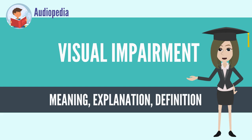Other disorders that may cause visual problems include age-related macular degeneration, diabetic retinopathy, corneal clouding, childhood blindness, and a number of infections. Visual impairment can also be caused by problems in the brain due to stroke, premature birth, or trauma, among others. These cases are known as cortical visual impairment.